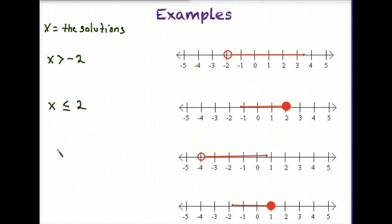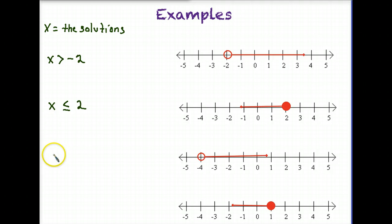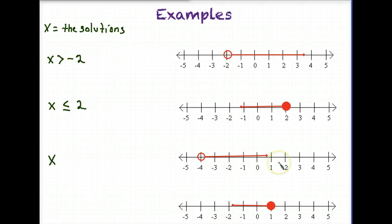If you want to try the next two examples on your own, go ahead and pause. Our solutions are to the right of negative 4, so they are greater than negative 4 — all those numbers are bigger than negative 4. But our solution does not include negative 4 because we have an open circle, so I use the greater than sign with negative 4.